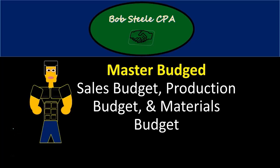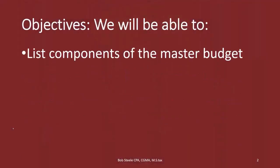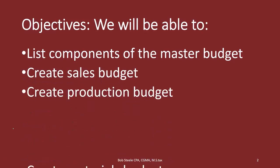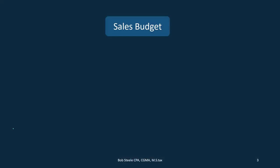Hello, in this lecture we're going to talk about the master budget. We're going to go through the sales budget, the production budget, and the materials budget. At the end of this we will be able to list the components of the master budget, create the sales budget, create the production budget, and create the materials budget. We're going to start off looking at the list and the activities that go through the master budget for a production company — a company that produces things.